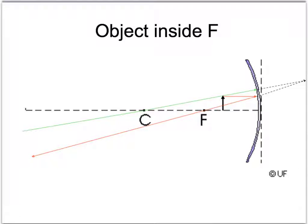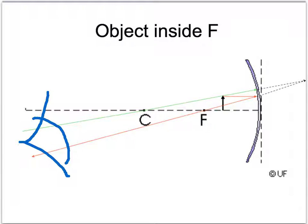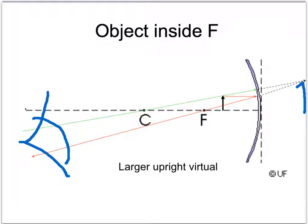If the object is inside the focal point — closer to the mirror than F — the two rays we draw (in parallel out through F, and the center ray) are spreading out and will never meet. But if you put your eye there and look along those paths, the rays would actually seem to meet at a point inside the mirror. So looking in the mirror, you'd see a larger, upright, virtual image inside the mirror. It's virtual because the light isn't really coming from there — it just seems to be.